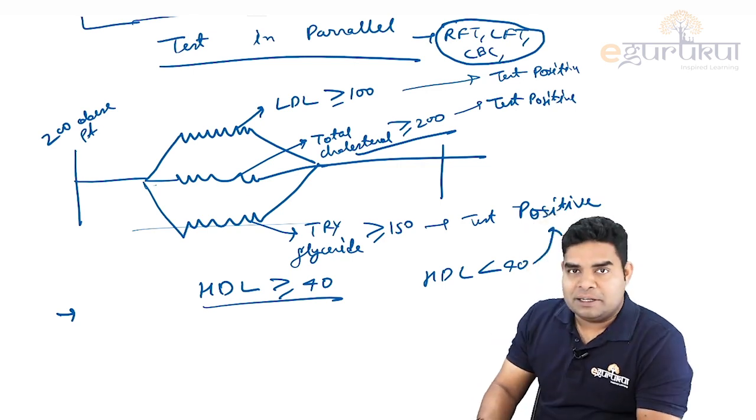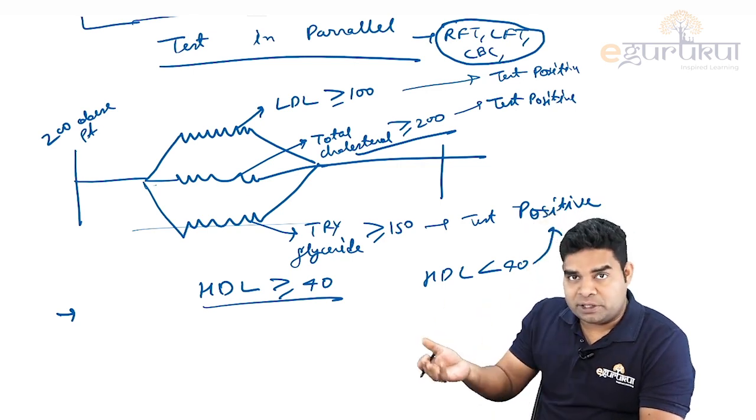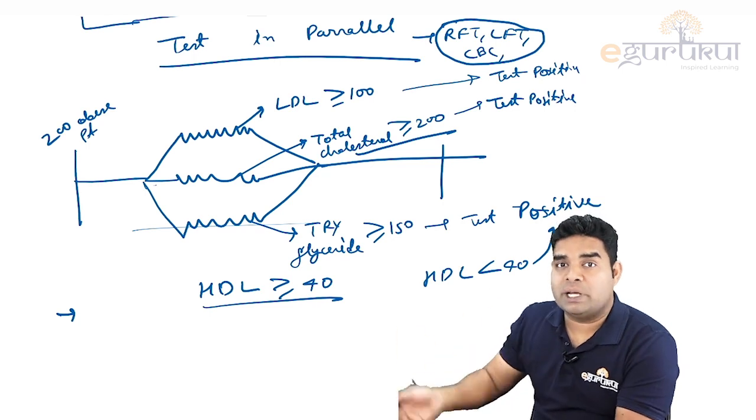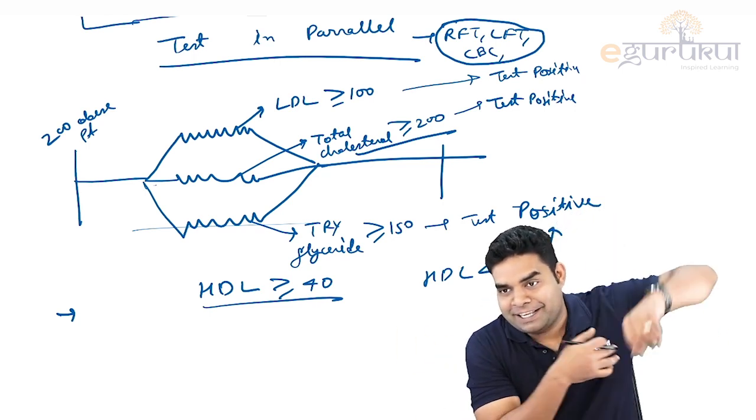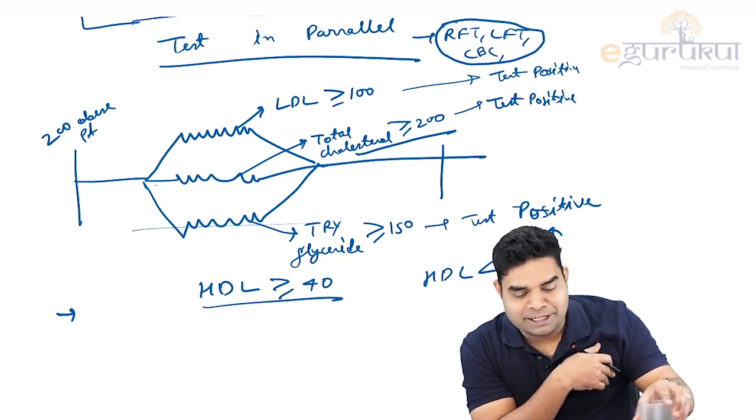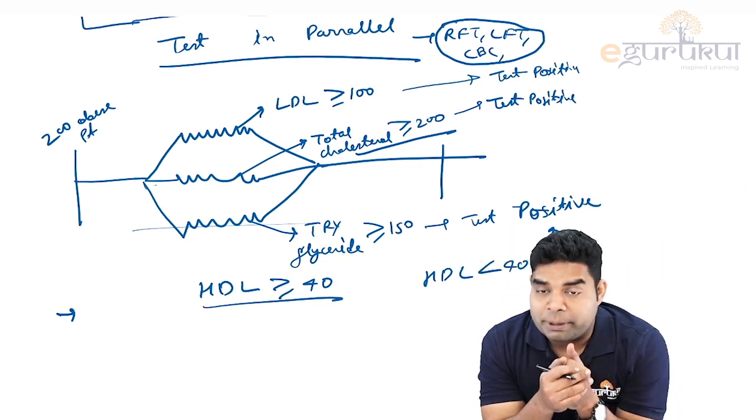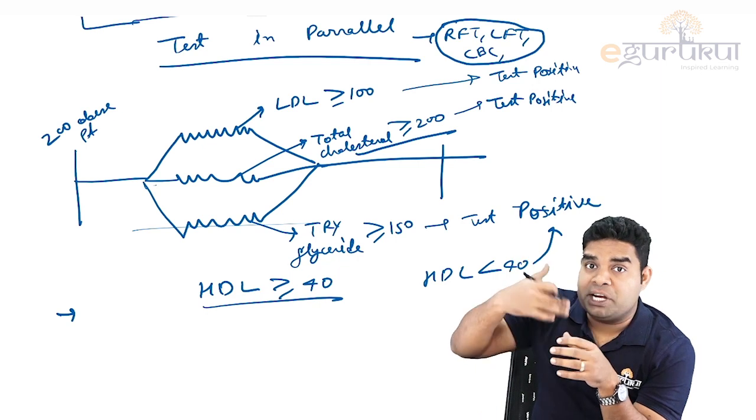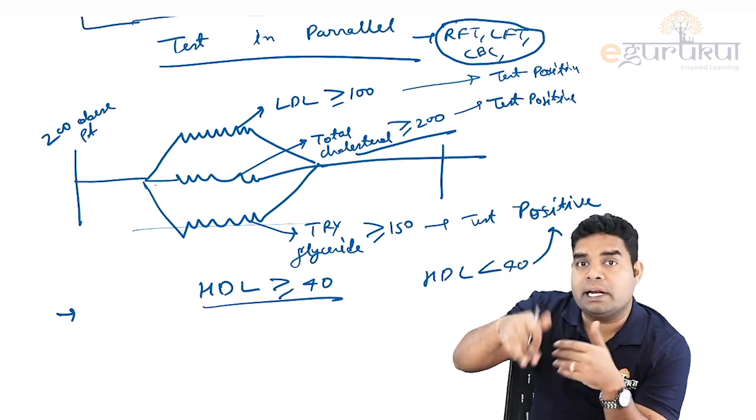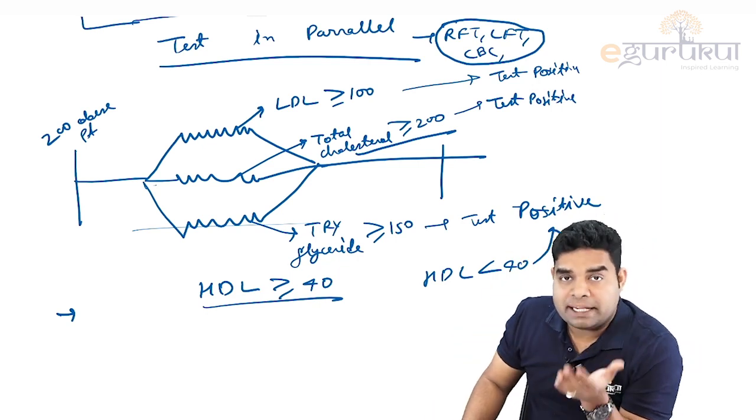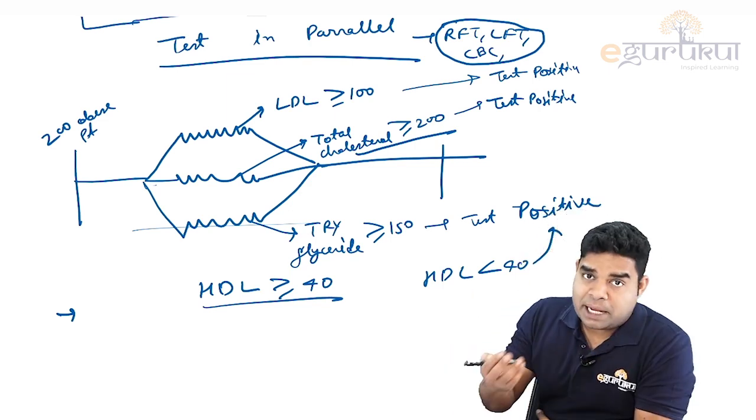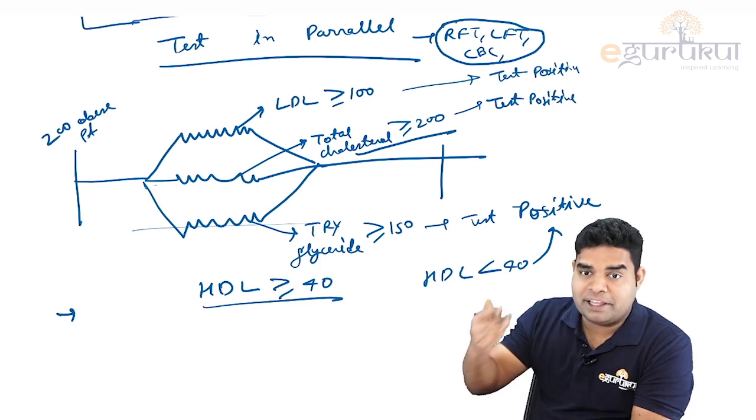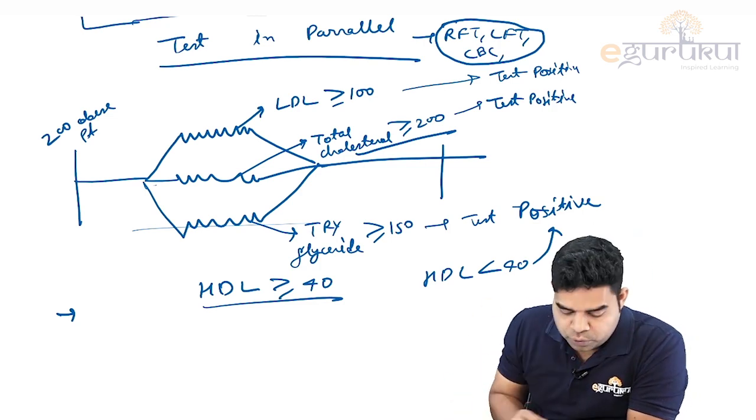Suppose only one parameter like total cholesterol is more than 200 for me—that will be good for me. Just because of one parameter being more, I am positive, so I may start doing exercise, eating good healthy diets, less heavy dinners, less beers. That will be good for me. Therefore we want the patients to be positive so that they can correct their lifestyle. That's why we do test in parallel, because test in parallel gives us more positives.